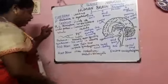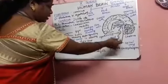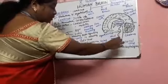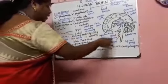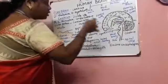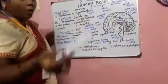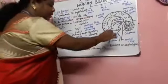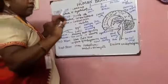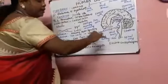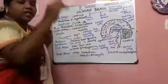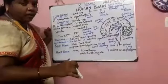The hindbrain has the pons, and it has been connected with the spinal cord, cerebrum, and the medulla oblongata. The main importance of the medulla oblongata is there, and it has been connected with the pons and the spinal cord.